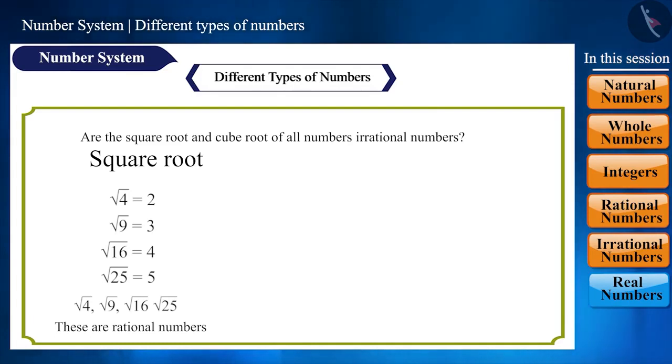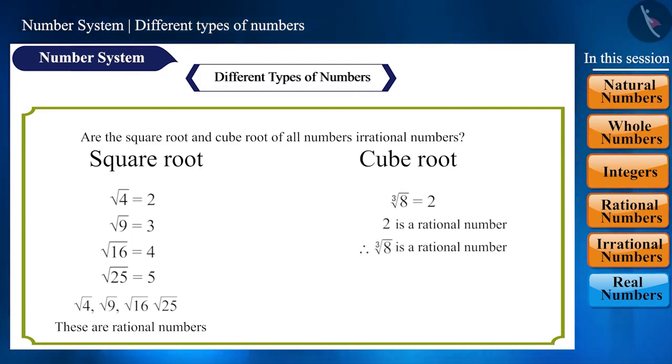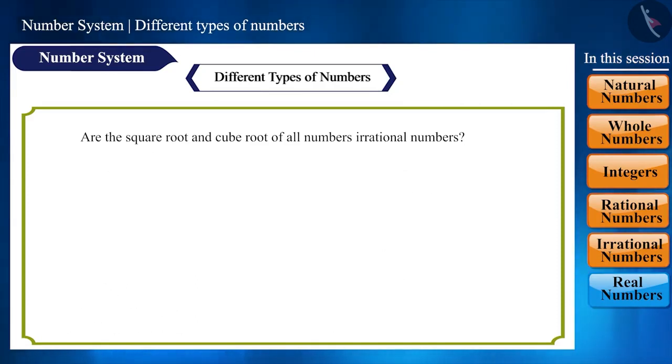And now speaking of cube root, cube root of 8 is 2, which is a rational number. Therefore, cube root of 8 is a rational number. Similarly, cube root of 27, cube root of 64, and cube root of 125 are rational numbers. Numbers that are perfect square roots or perfect cube roots are called rational numbers.